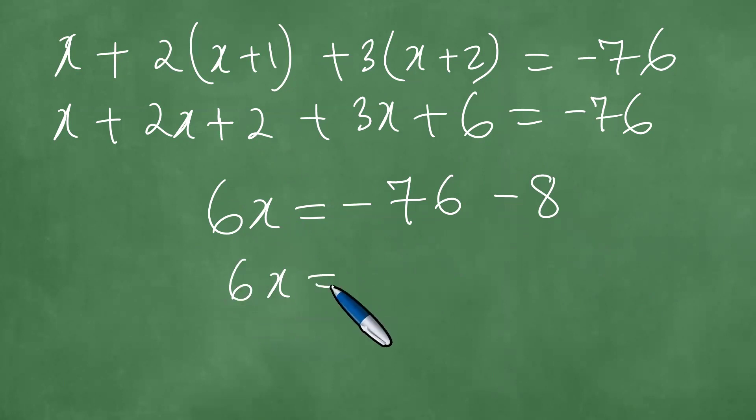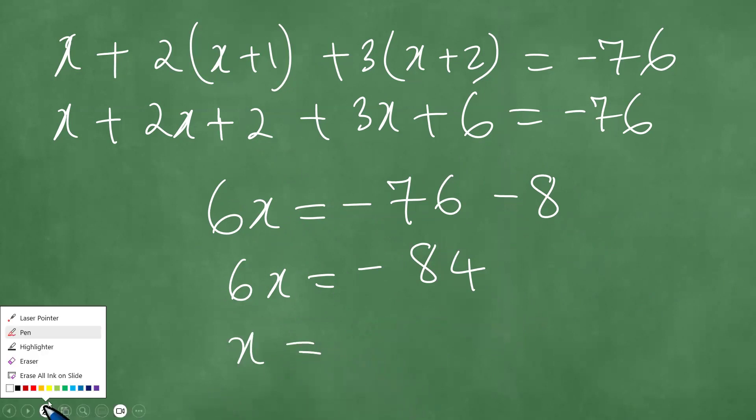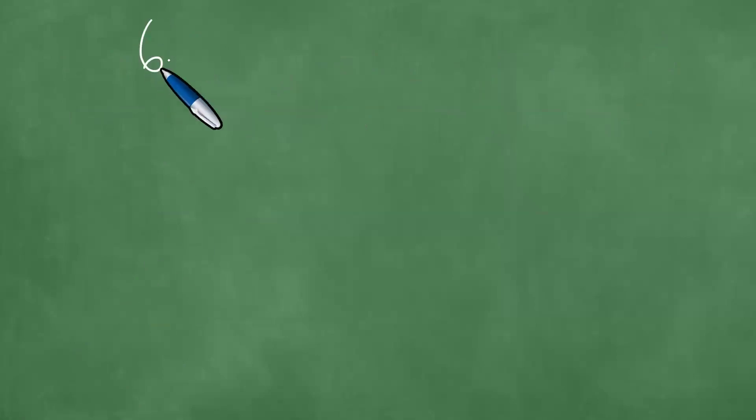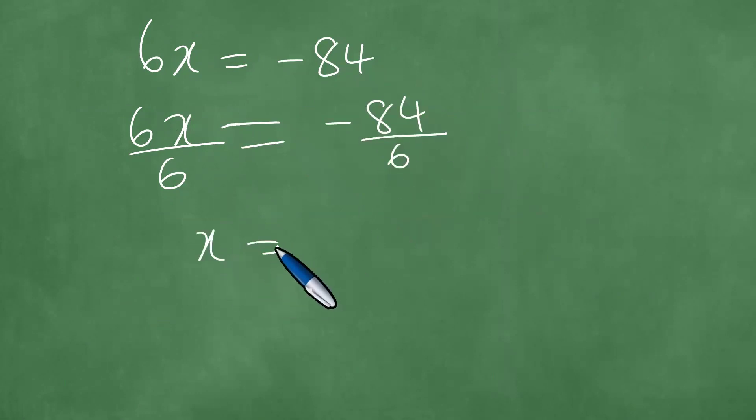We have 6x equals minus 84. If you divide by 6 both left and right, we obtain the following. So 6x divided by 6 equals minus 84 divided by 6, and we have x equals minus 14.